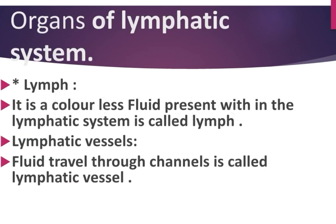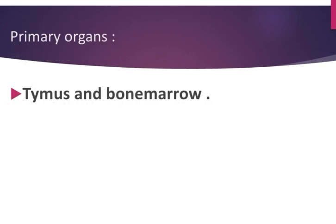Now, the organs of the lymphatic system. First is lymph — it is a colorless fluid present within the lymphatic system. Second is lymphatic vessels — fluid travels through channels called lymphatic vessels. There are two categories of organs: primary organs and secondary organs.